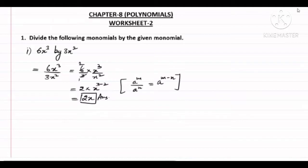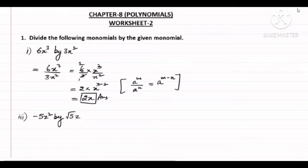Similarly, you can see the third part — the second part is completely the same, you can do it yourself. Now I am doing the third part. The question is: divide minus 5z² by under root 5·z. We can write this in a completely similar way as minus 5z² upon under root 5·z.